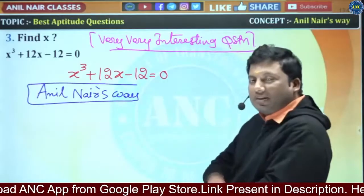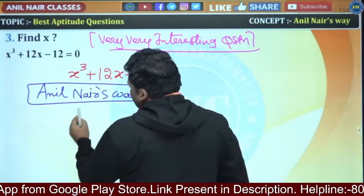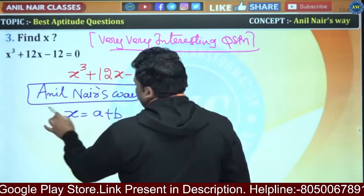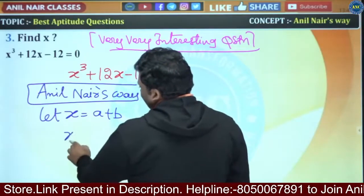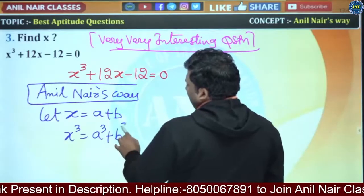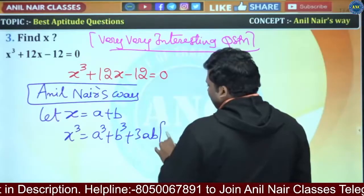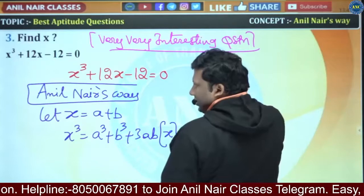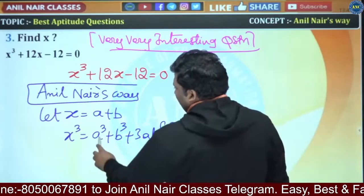Anil Nair's way of solving this question — no hi-fi concepts. Because it is a cube, let me take x = a + b. If I cube it: a³ + b³ + 3ab(a + b). Since a + b = x, we have a + b = x.